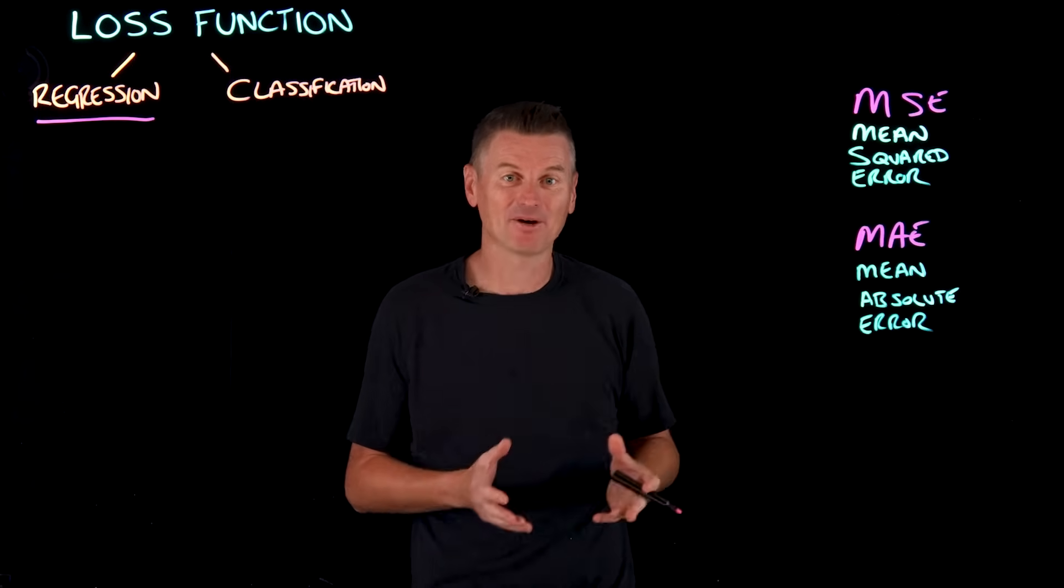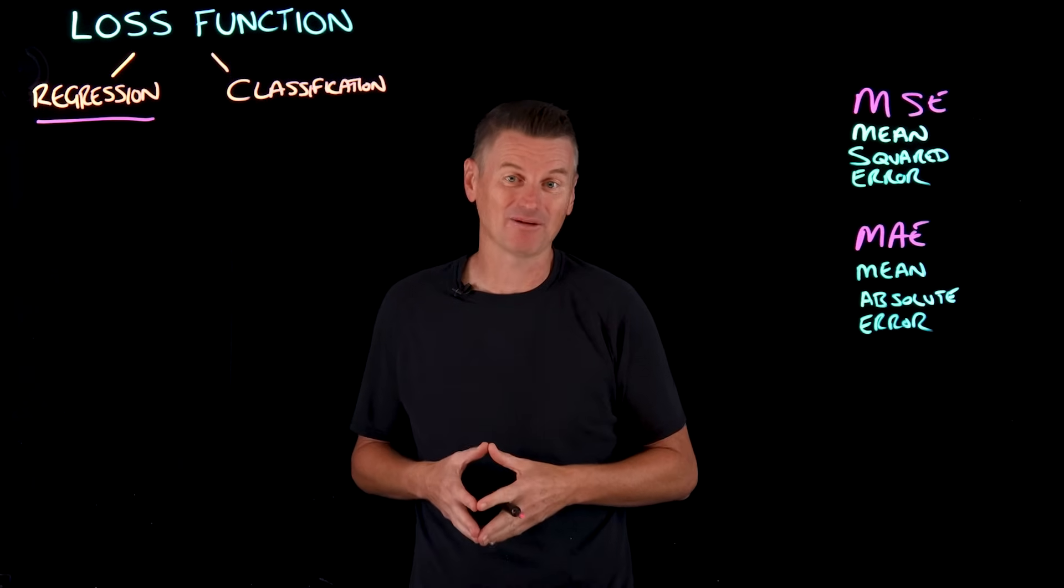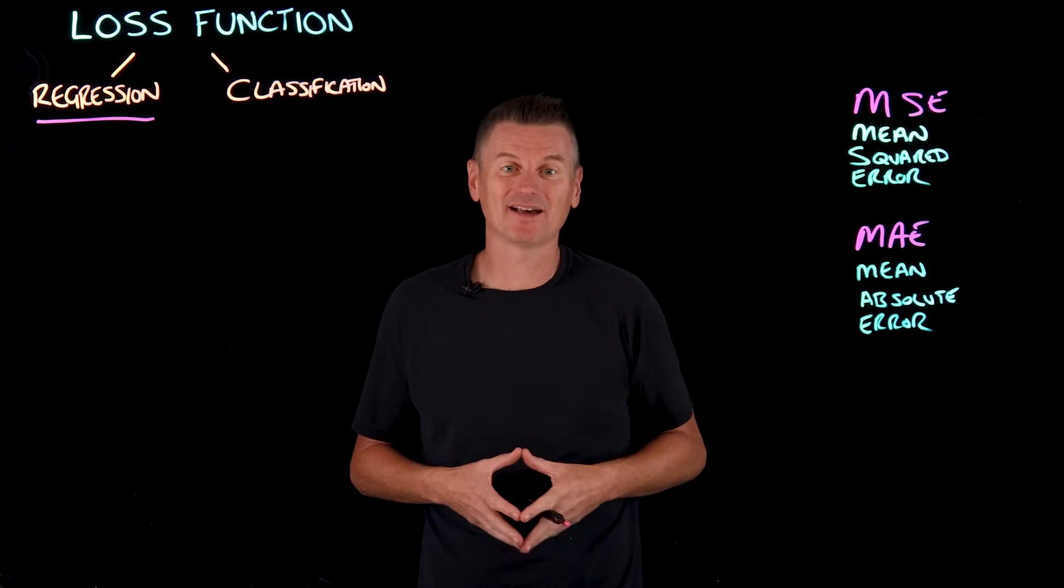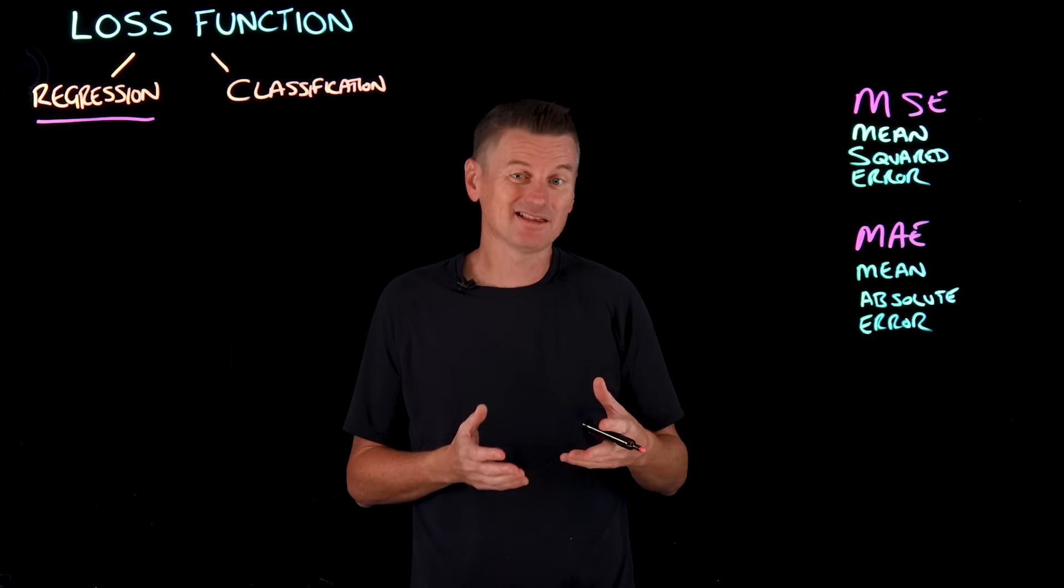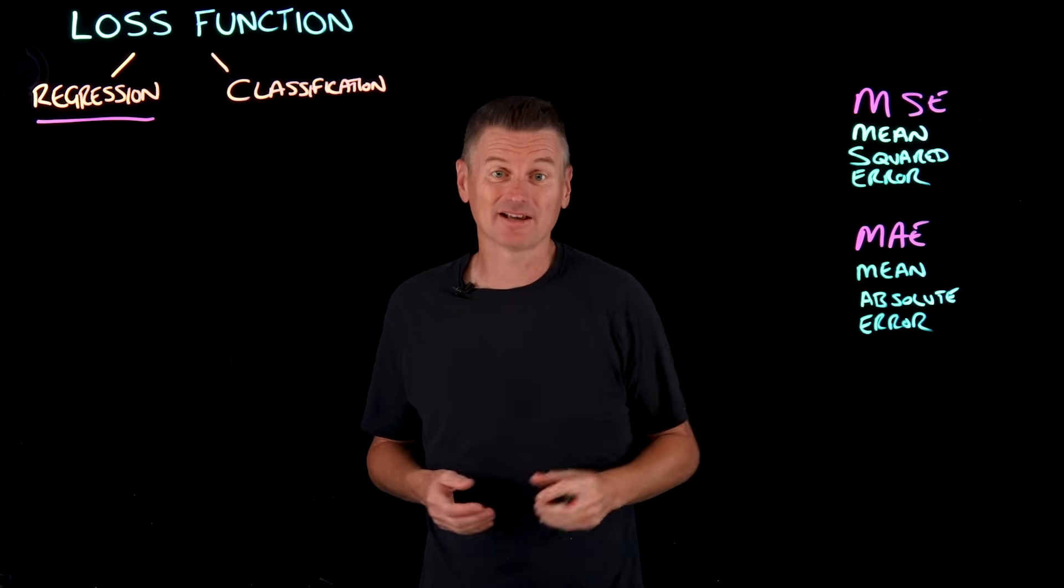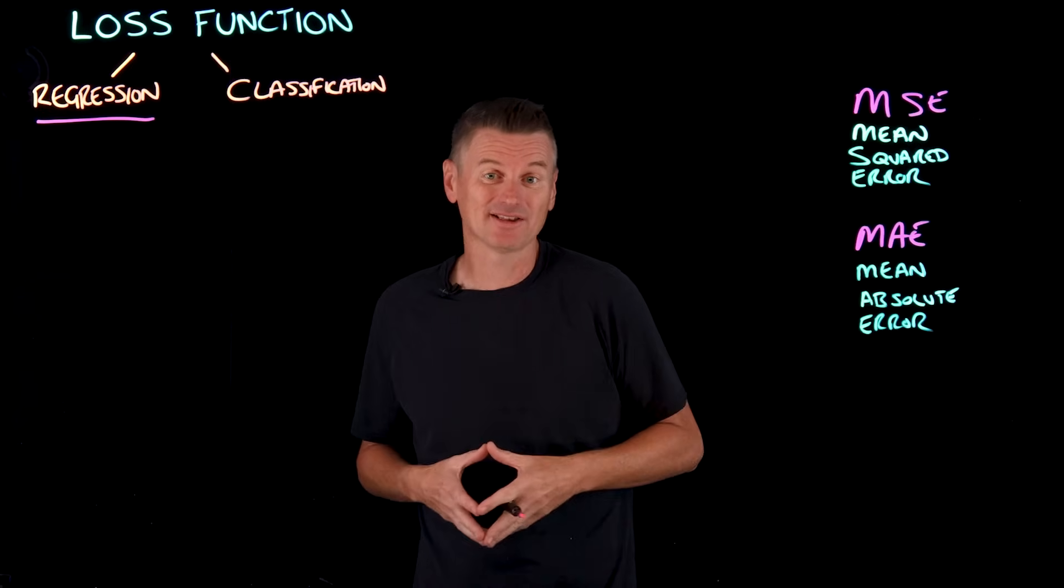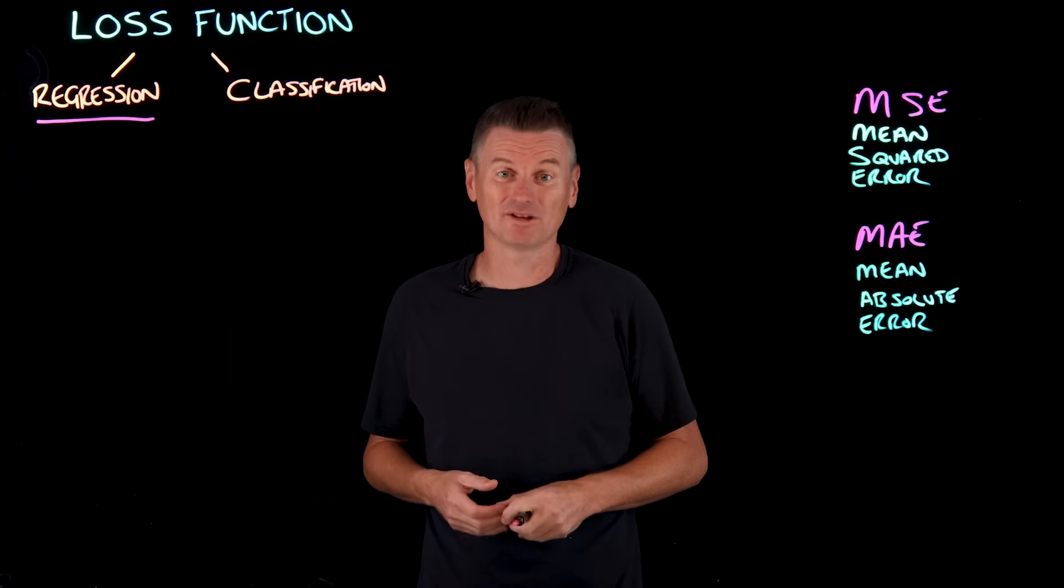MAE is a better option when data does contain more outliers and we don't want those outliers to overly influence the model. Forecasting demand for a product, that's a good example, where occasional surges in sales shouldn't overly skew the model.